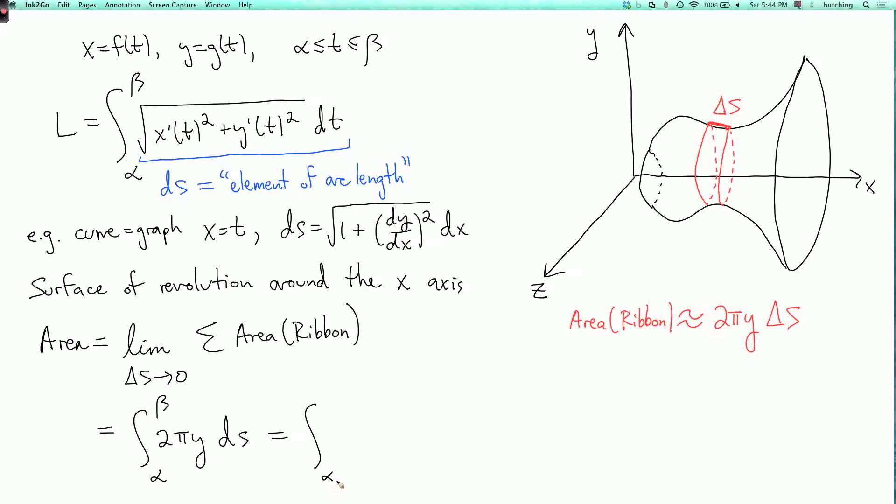Or if we want to expand that out as functions of t, this is the integral from alpha to beta of two pi y of t square root of x prime of t squared plus y prime of t squared dt. So it looks just like the formula for length, except you have to multiply by two pi y, because that's the circumference of a circle obtained by taking the point where you are on the curve and rotating around the x-axis.